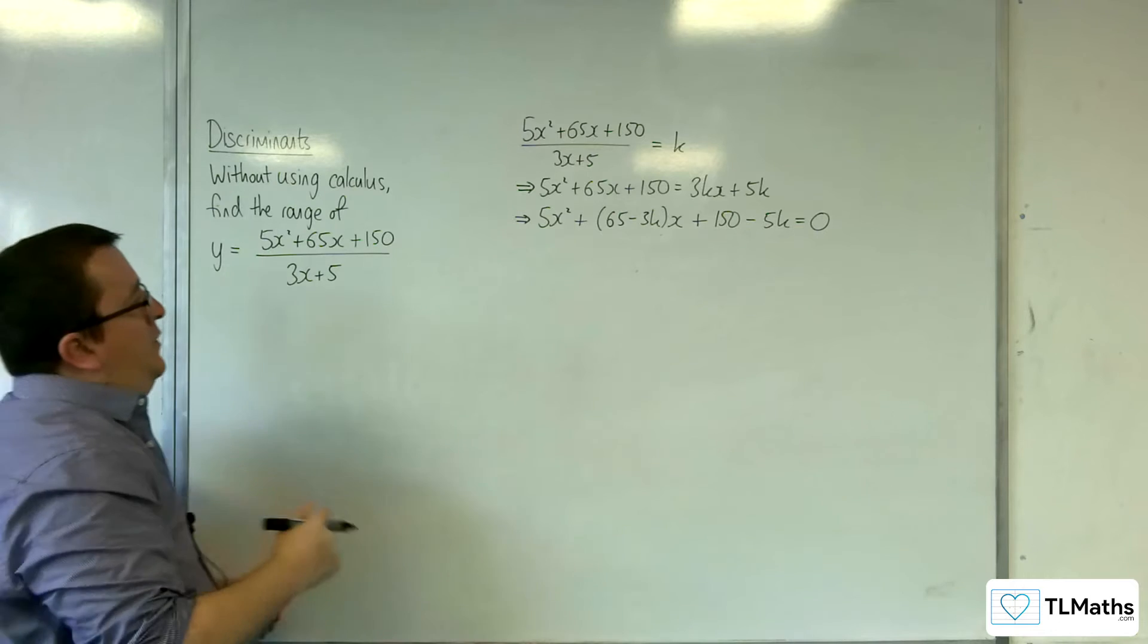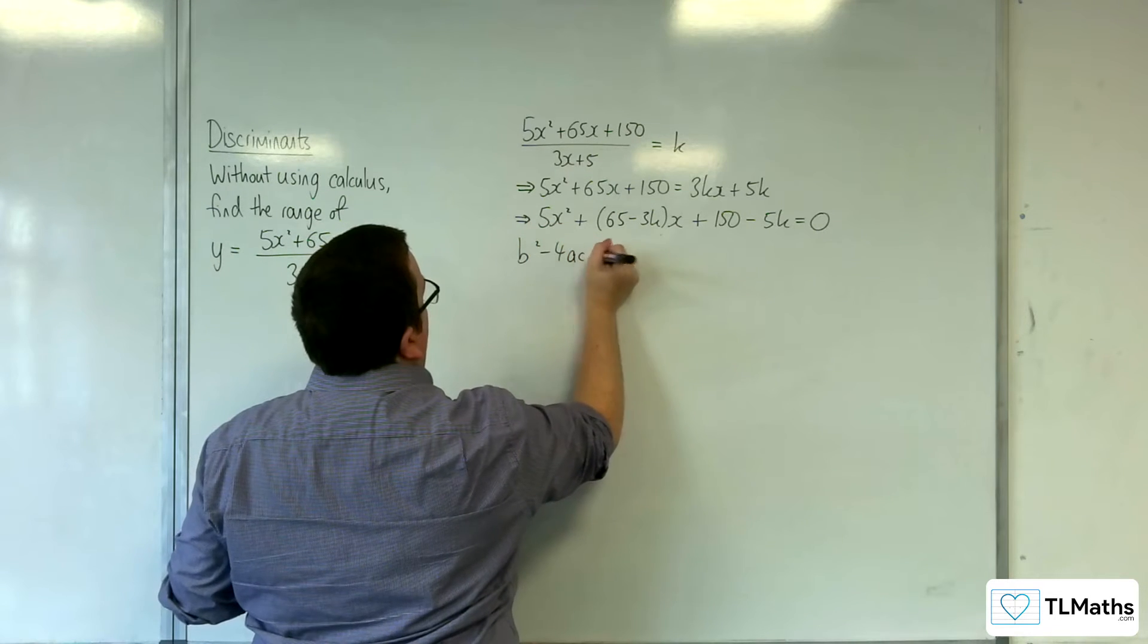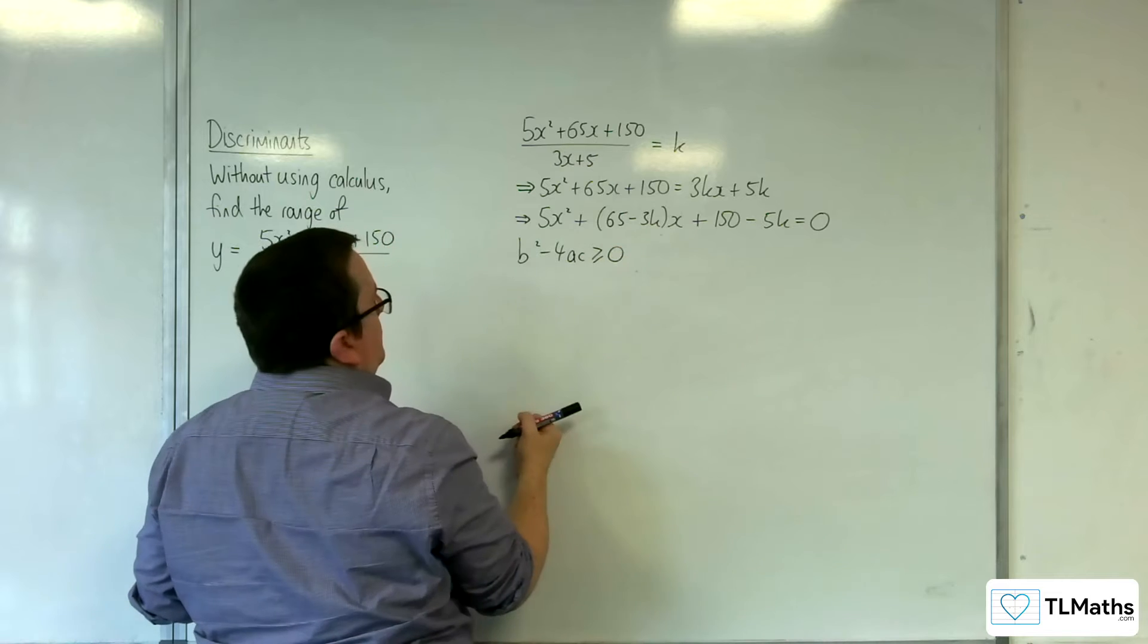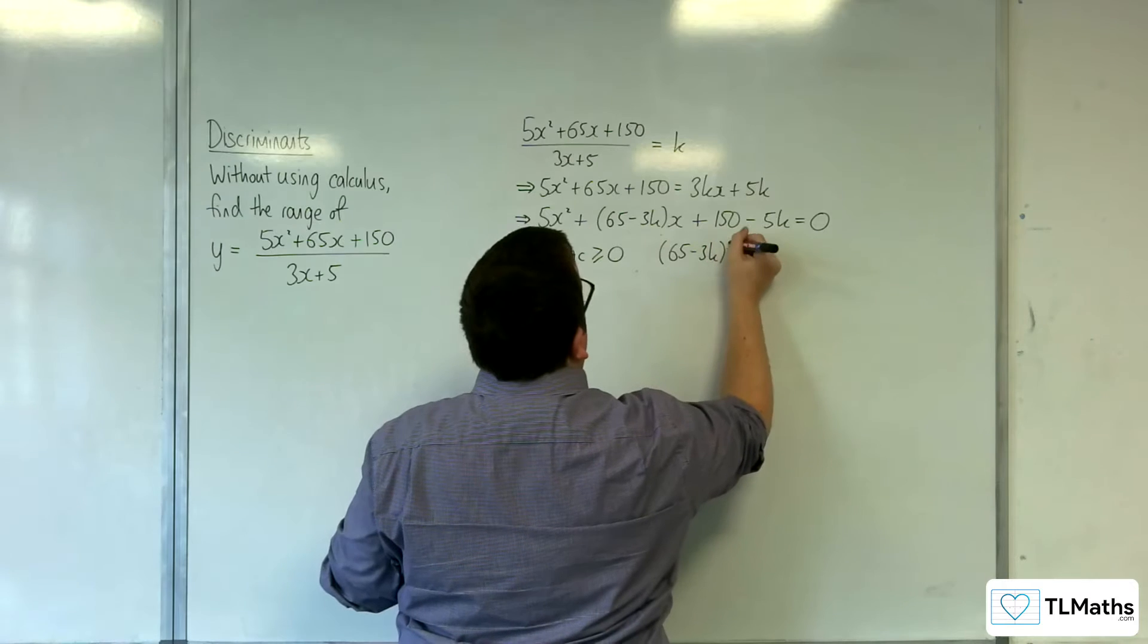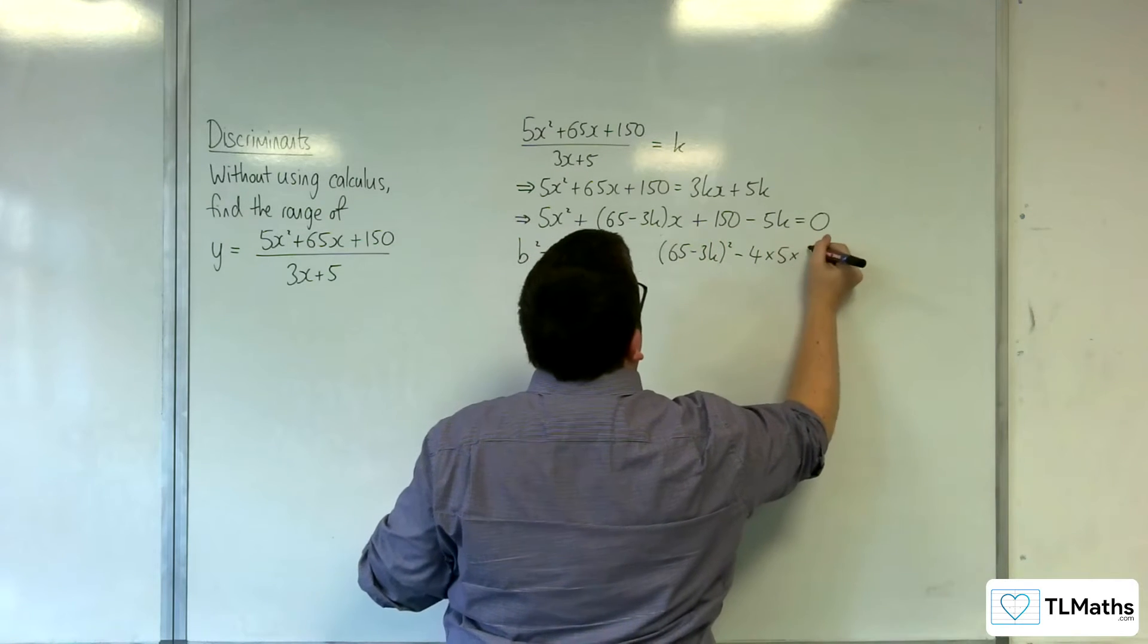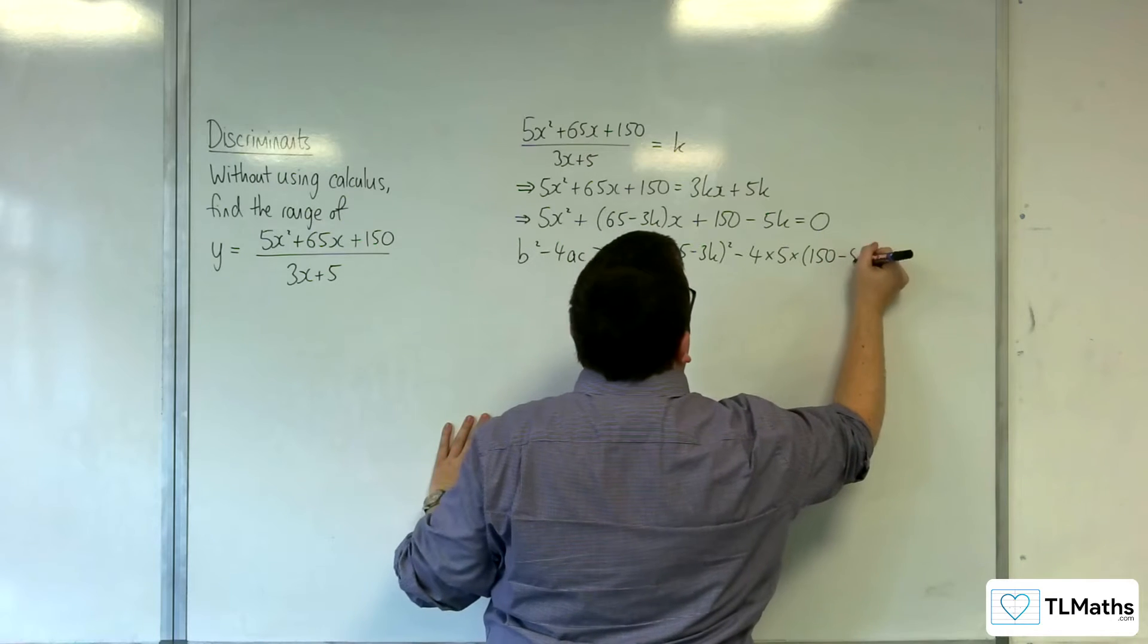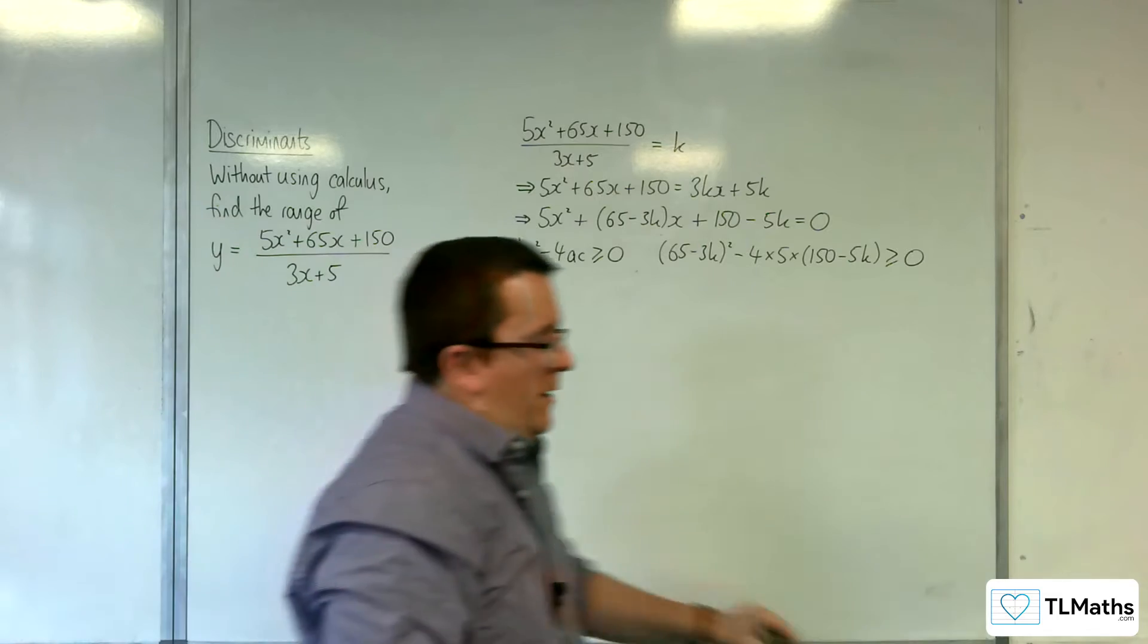So if I need to find the range, I'm going to look at the discriminant being greater than or equal to 0. So I'll have 65 take away 3k all squared, take away 4 lots of 5, times 150 take away 5k is greater than or equal to 0.